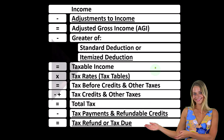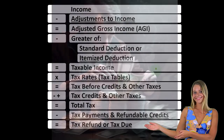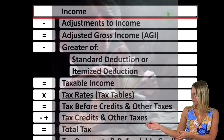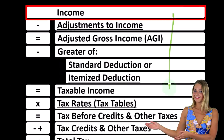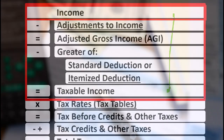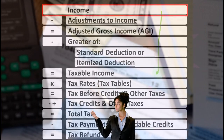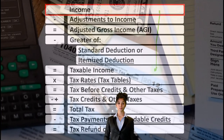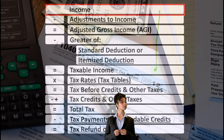Looking at the Income Tax Formula, we're focused on Line 1 Income. The first half of the Income Tax Formula is, in essence, an income statement. However, it's just an outline — a scaffolding — with other forms and schedules flowing into it, the Schedule C being one of them.